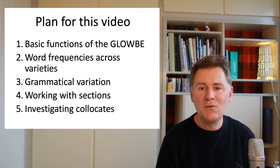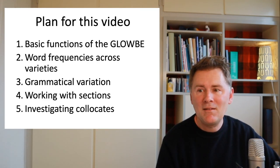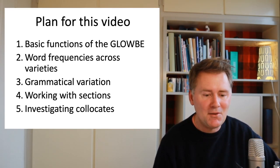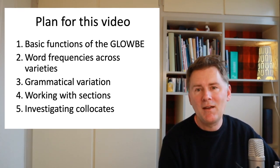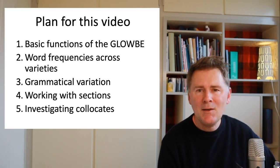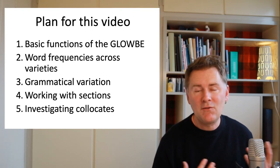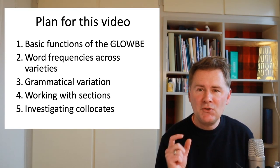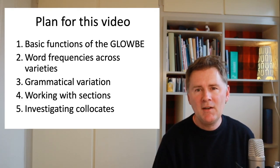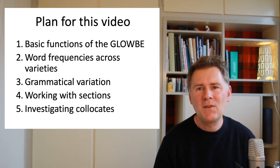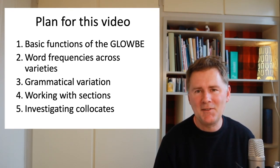My plan for this video is as follows. First of all, I want to show you some basic functions of the Globe interface, then we'll be looking at word frequencies compared across different varieties of English. We'll also look at a few cases of grammatical variation, and then we'll be working with sections. The Globe is structured so that you can compare varieties of English side by side. We'll also be looking at collocates — different words and what other words co-occur with them in different varieties of English.